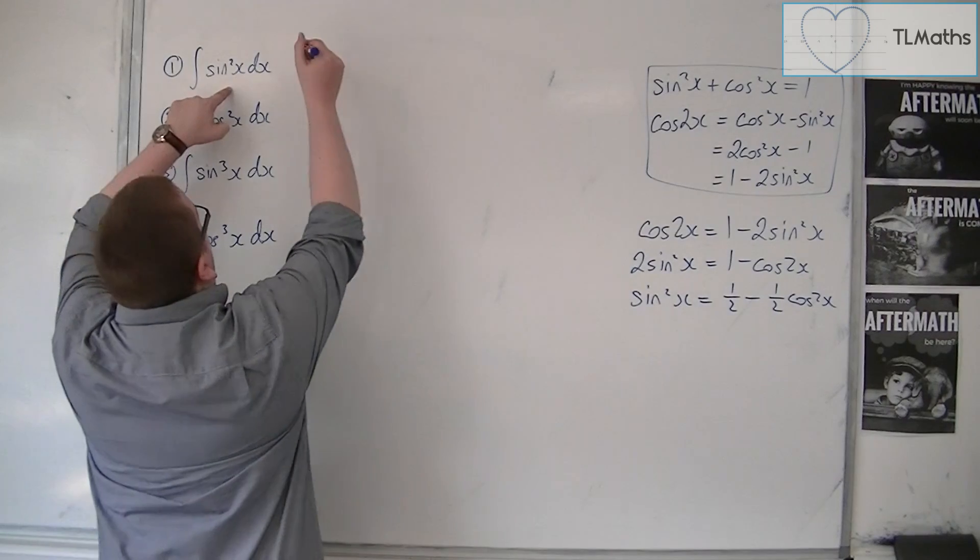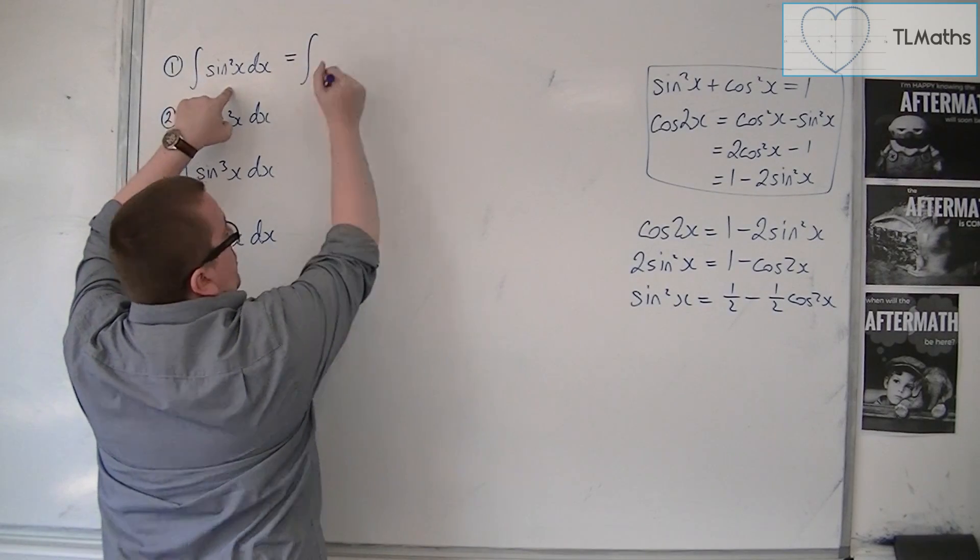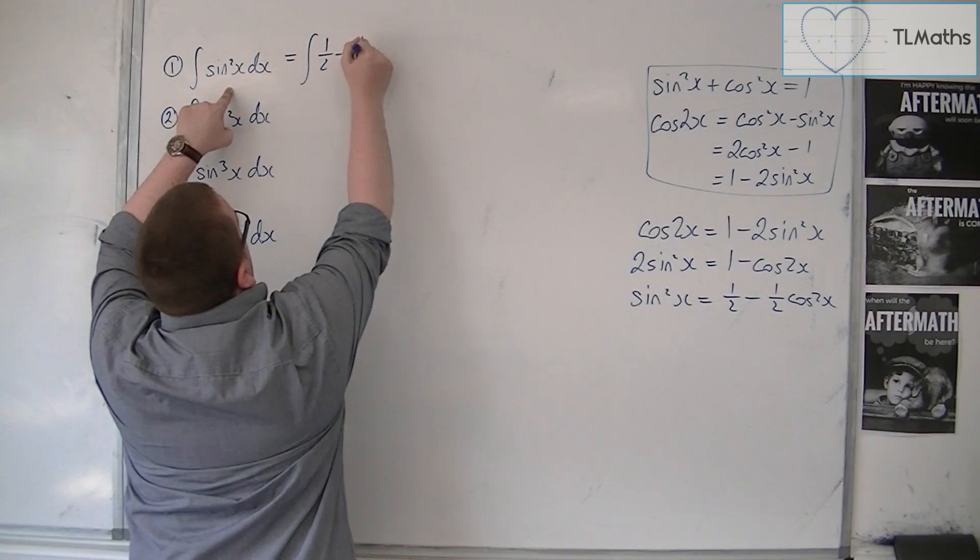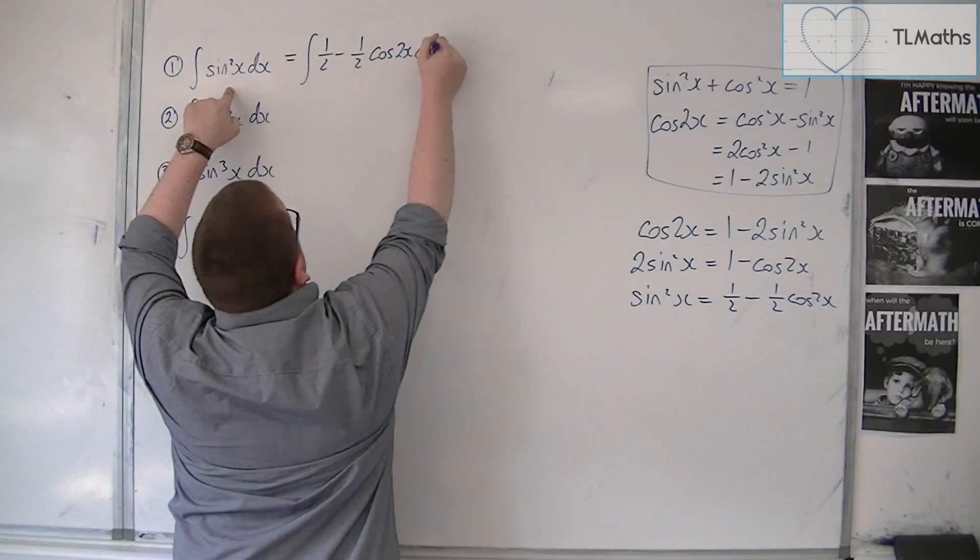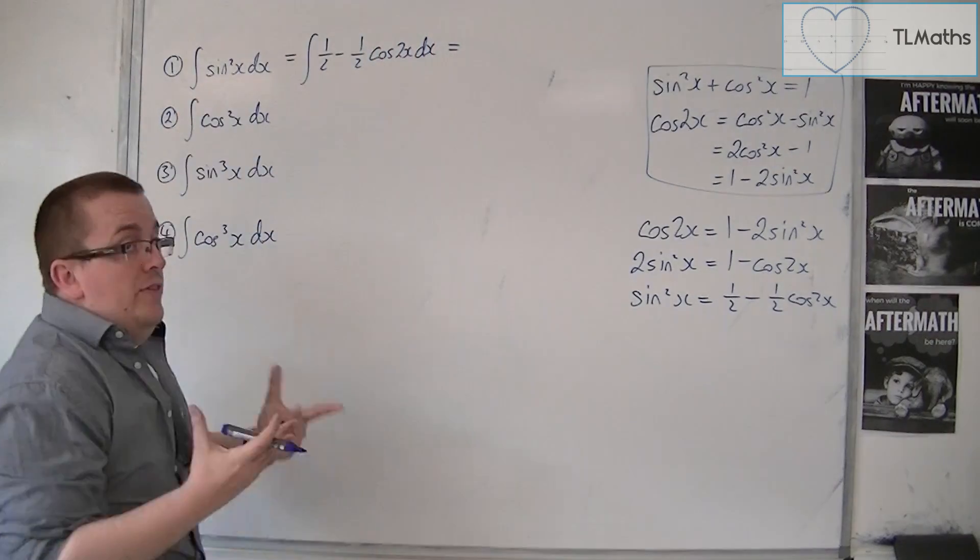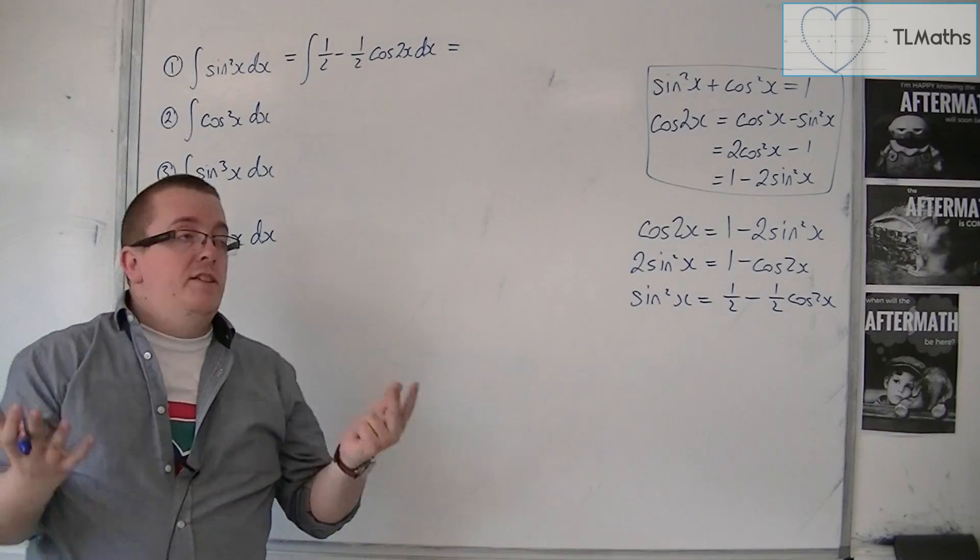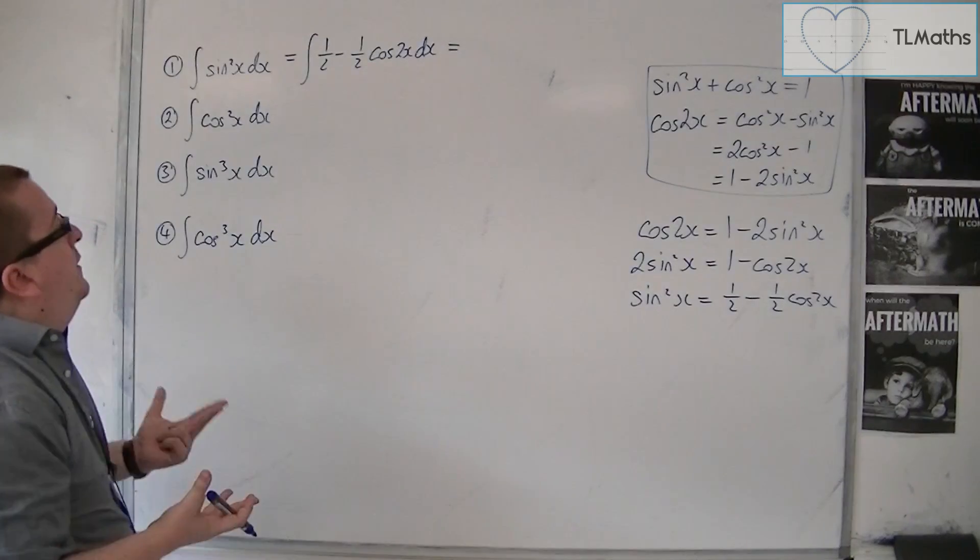So I can replace this integral with the integral of 1 half, take away 1 half cos2x dx. And this one I can integrate. It's not in any way fancy now.